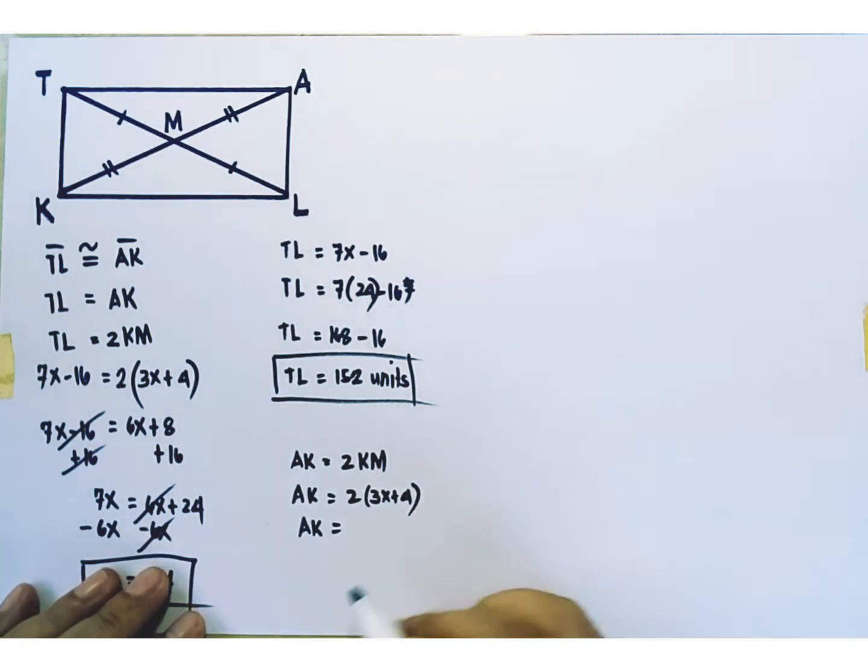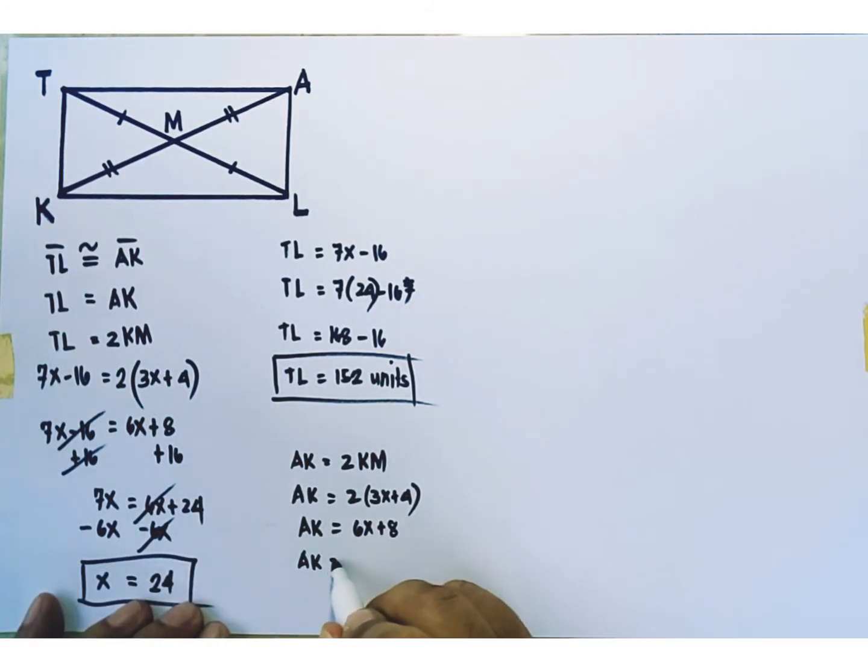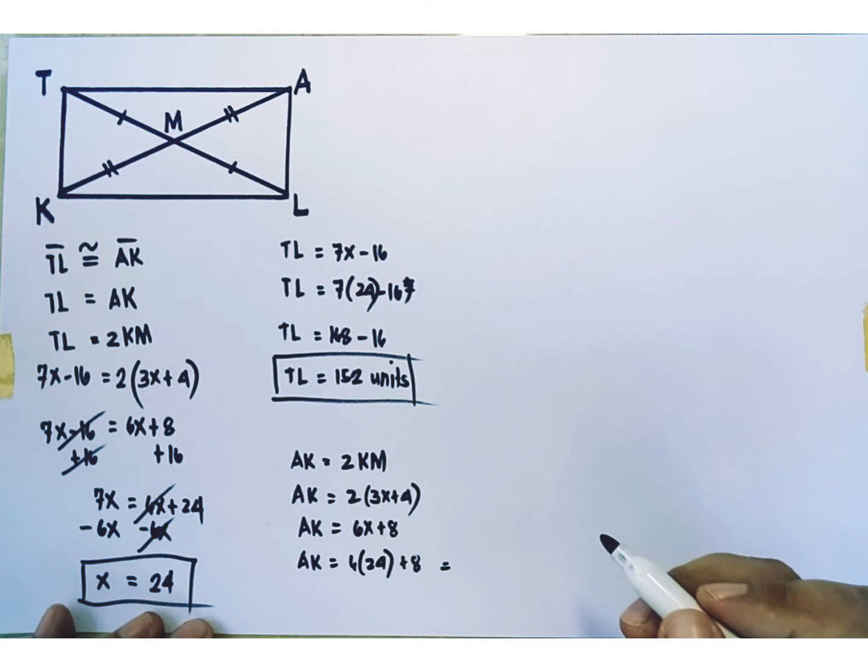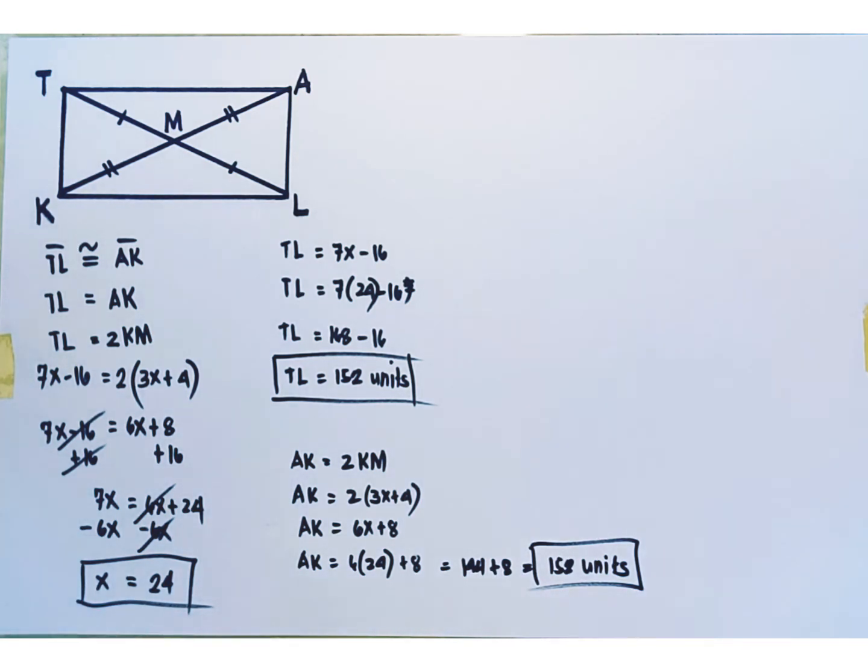So, AK becomes 6x plus 8. Replace x with 24. AK is equal to 6 times 24 plus 8. And 6 times 24 is equal to 144. 144 plus 8 is equal to 152 units.